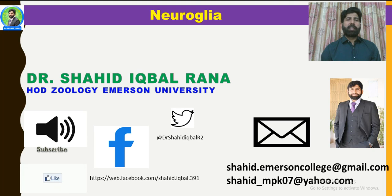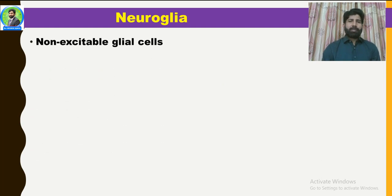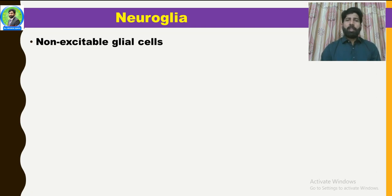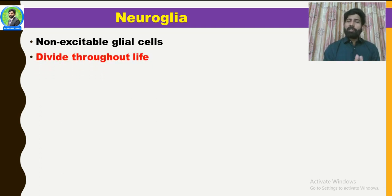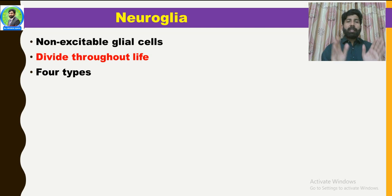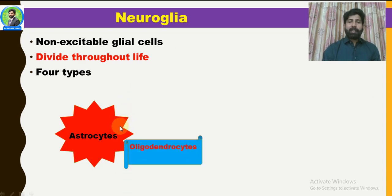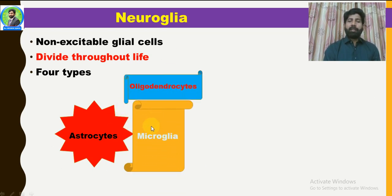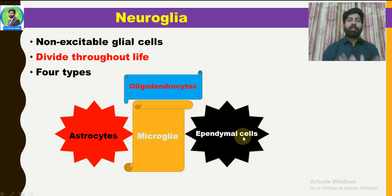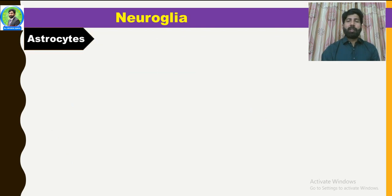Hi, this is Dr. Shahid Iqbal. I am going to discuss with you about Neuroglia. You must be familiar with neurons, because our CNS is more than 50% Neuroglia. Neuroglia are those cells which are non-excitable glial cells. Unlike neurons, they can divide throughout their life, whereas neurons can never divide after reaching maturity. There are 4 basic types of neuroglial cells: Astrocytes, Oligodendrocytes, Microglia, and Ependymal cells. We will discuss them one by one.